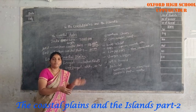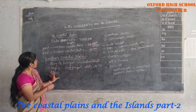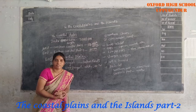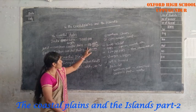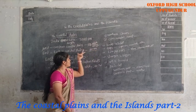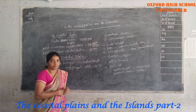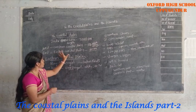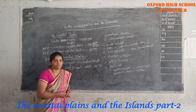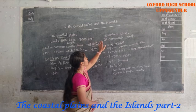The Eastern Coastal Plains are wider than the Western Coastal Plains. The average width is 65 kilometers, and the stretch is 120 kilometers. So the Eastern Coastal Plains are wider than the Western Coastal Plains. These Eastern Coastal Plains are divided into two parts.